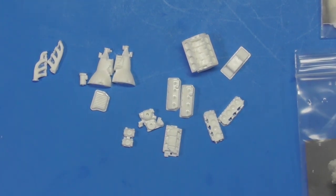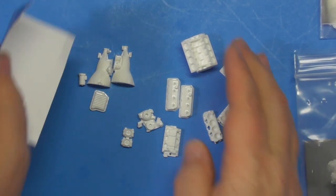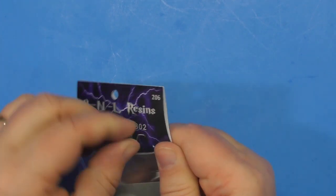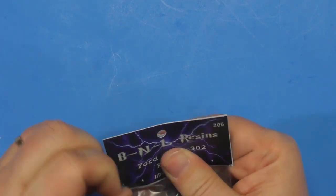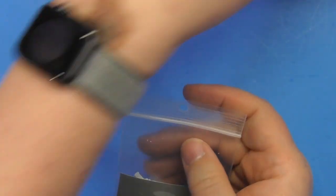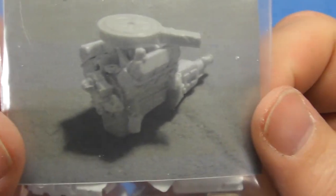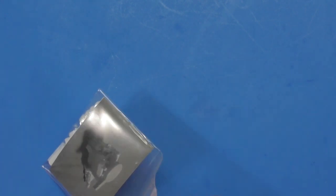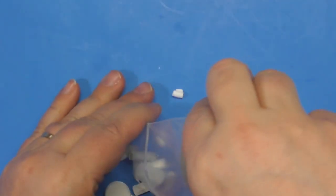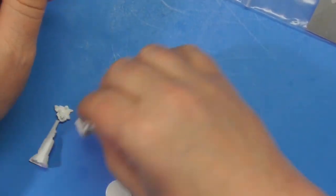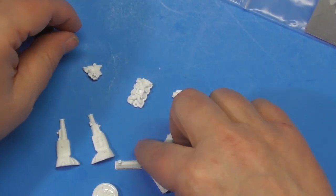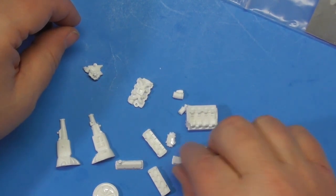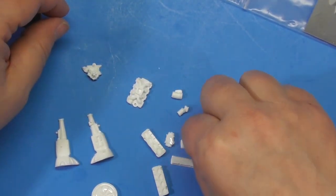So that's the 426 Hemi. Now Ford 302 Boss. The Boss 302 was primarily used for Mustangs. Block, oil pan, transmission halves. I am not a car expert so I can't tell you what kind of transmission that is. Cylinder heads, valve covers.